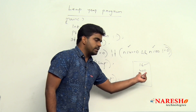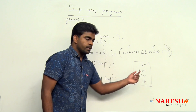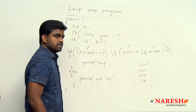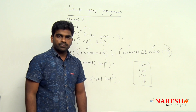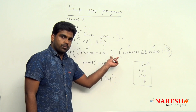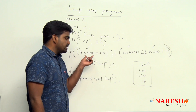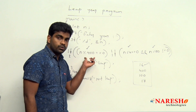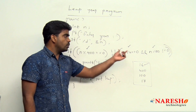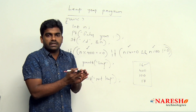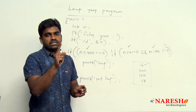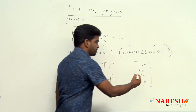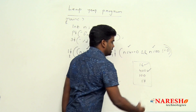Next, come to 400. Here 400 % 400 == 0 — condition true in the first case itself. For the logical OR operator, if the first condition is true it does not check the second one, because one true is enough to return true. So it directly prints: 400 is a leap year.